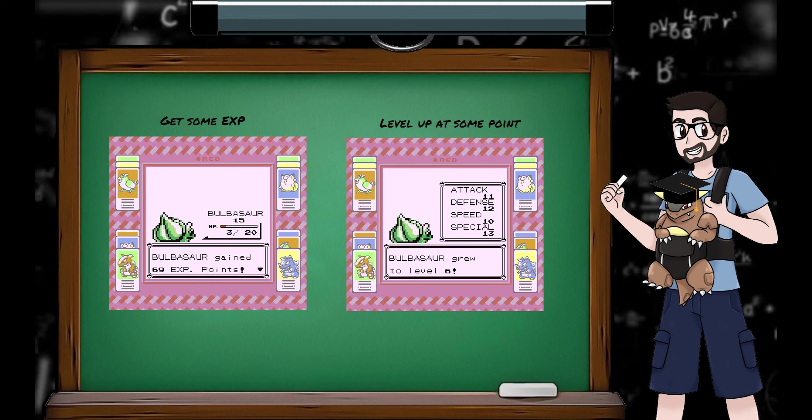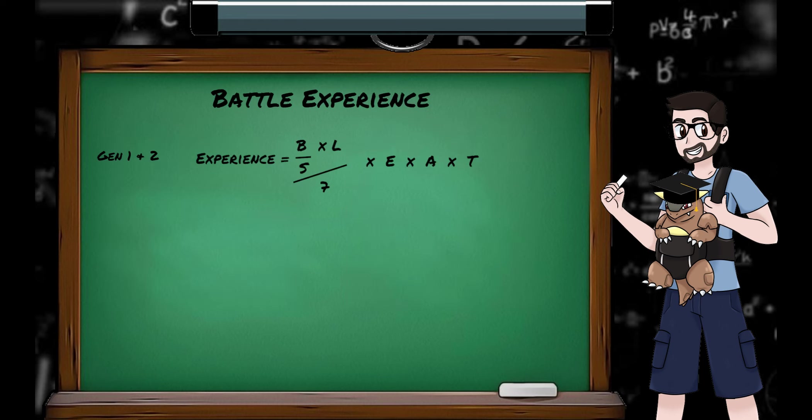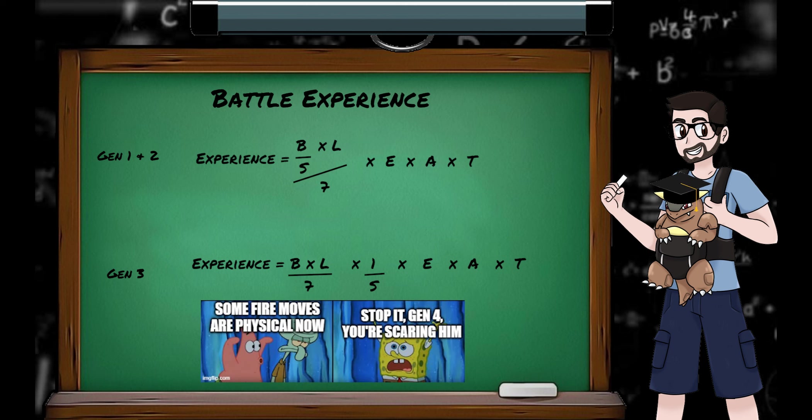For Generations 1 and 2, the formula for battle experience is this. And for Generation 3, it's this. The Generation 3 formula is the same for Generation 4, but as I've only played the first three so far, that's what I'll be sticking with for now.